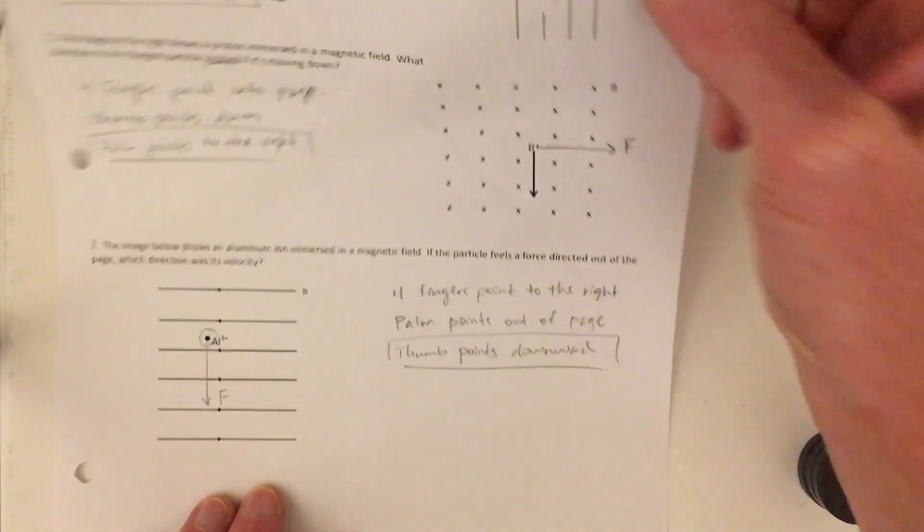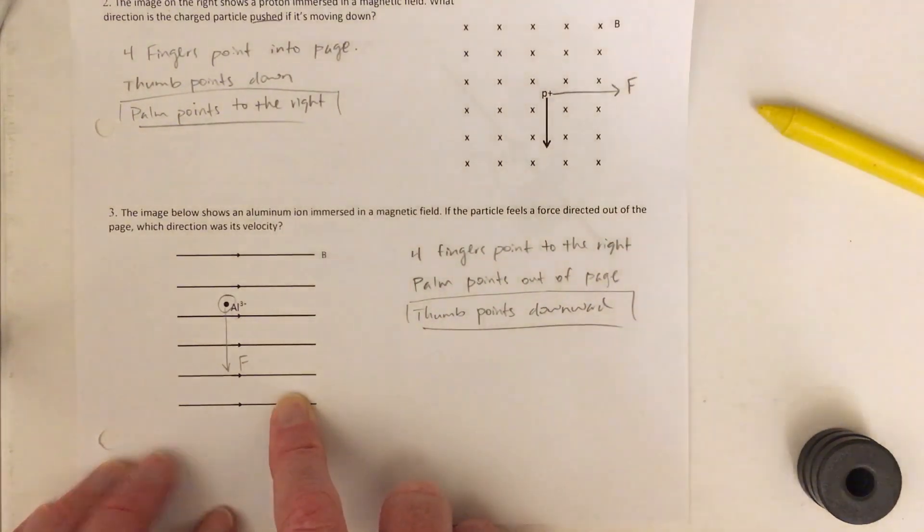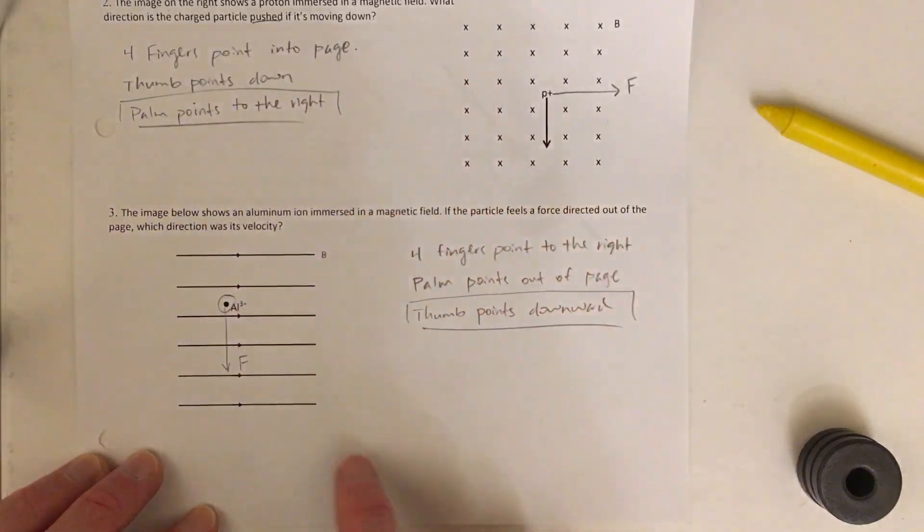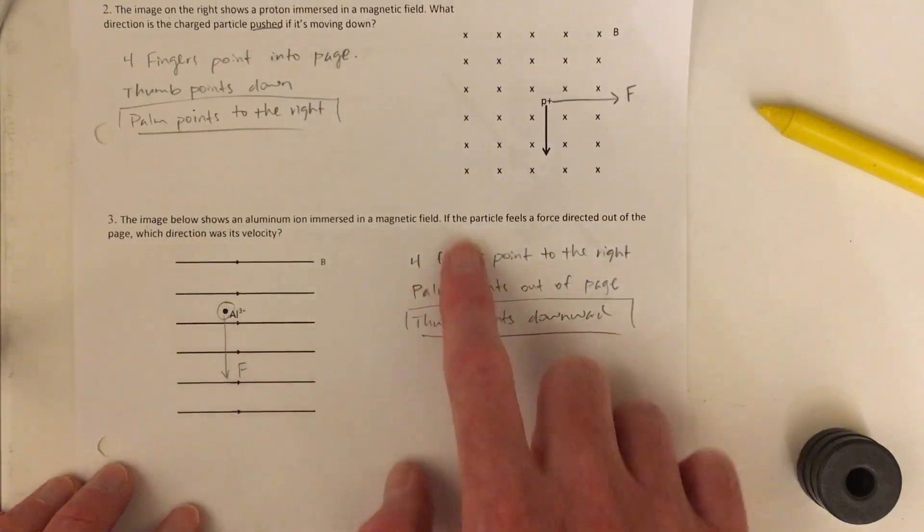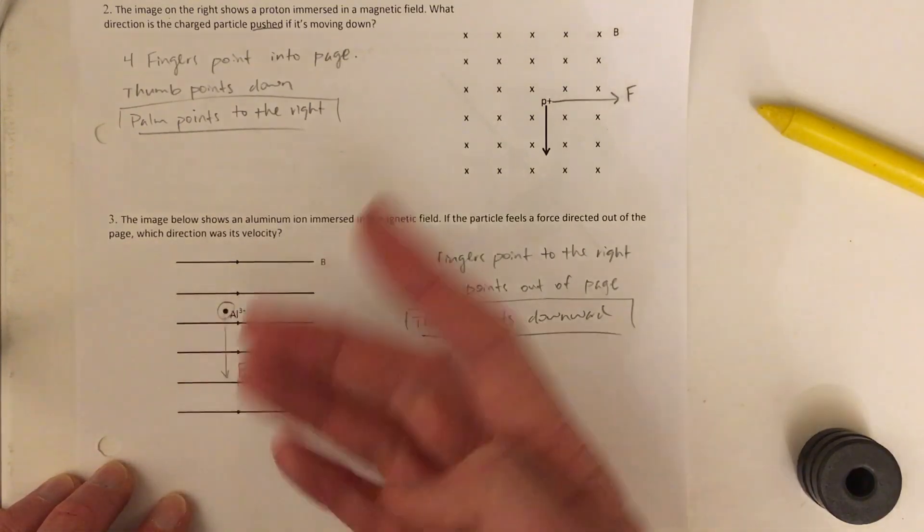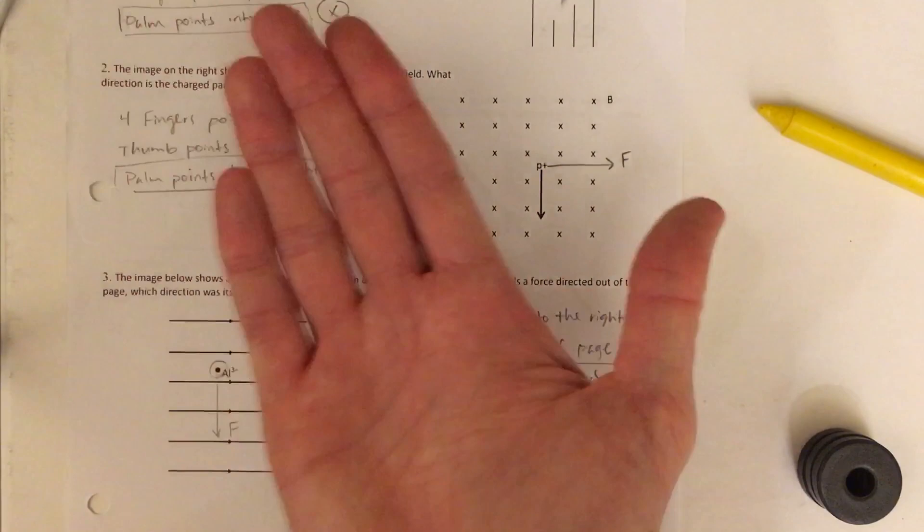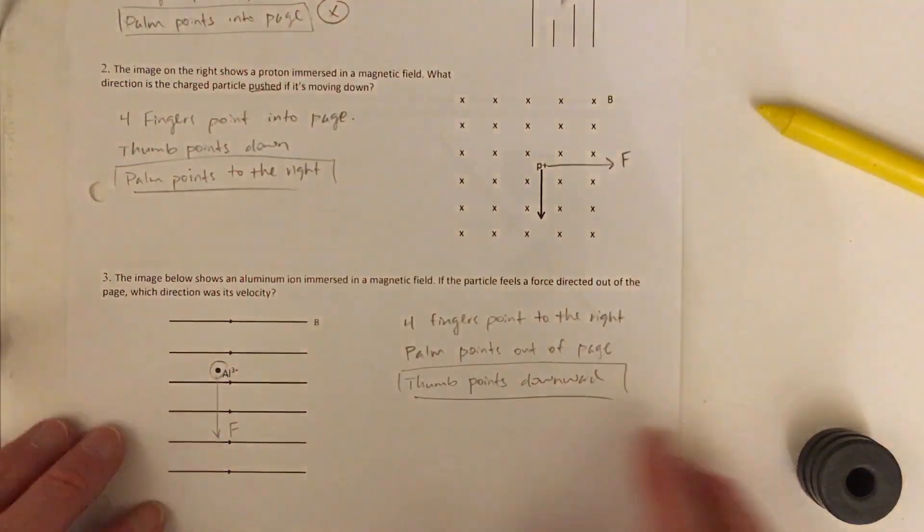Number three, now I've got magnetic field lines pointing to the right, so I point my four fingers that way. Then it says, if the particle feels a force directed out of the page. So now I'm going to take my palm, which always tells me the direction of the force, and I'm going to point it out of the page. But then I've got to, sometimes it's cool to rotate the page. I'm going to go this way.